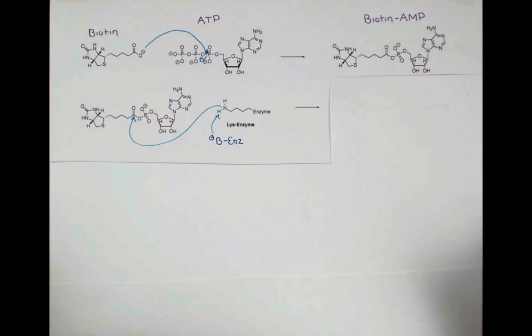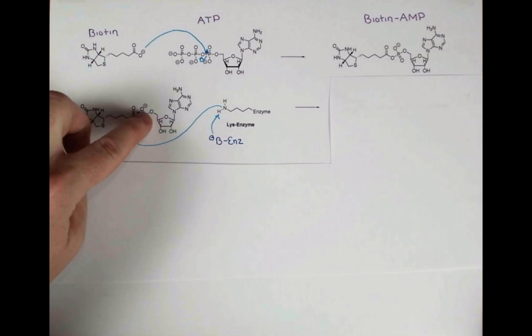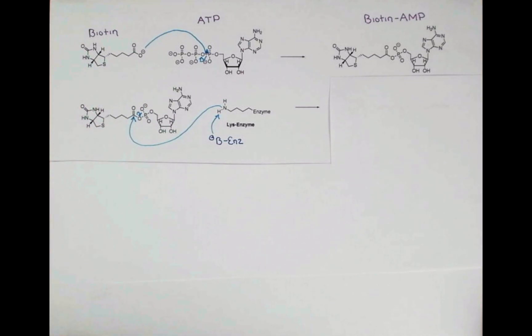This will form a tetrahedral intermediate, pushing the electrons up onto oxygen. They'll swing back down, and I'm going to use a biochemical shorthand to just show the bond breaking to the AMP group.